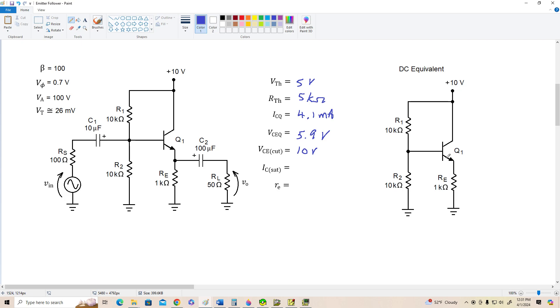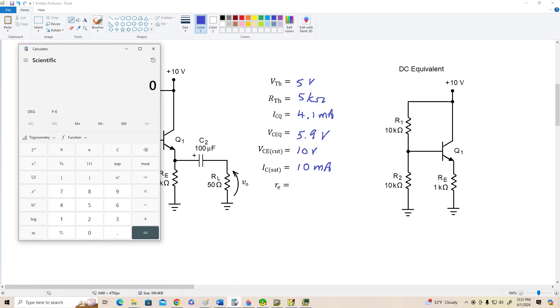ICSAT, VCC over RE, so that will be 10 milliamps. And finally, little RE is 26 millivolts divided by ICQ is 4.1 milliamps. So we've got little RE of about 6.3 ohms.